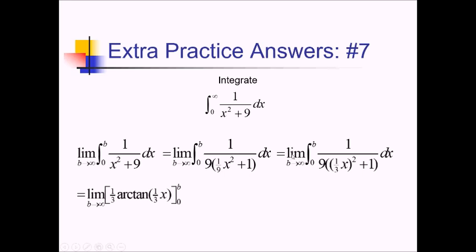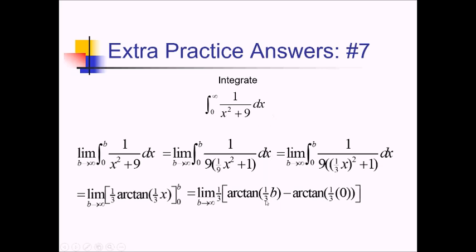So I'm going to have arctan of 1 third x, but I have to divide by the inner derivative. Dividing by 1 third really means multiplying by 3, and we already have a 9 in the denominator, so I have 3 over 9, which comes out to 1 third arctan of 1 third x, evaluating from 0 to b. As b approaches infinity, arctan of infinity — taking an infinite slope and giving back an angle — is 90 degrees or pi over 2. With 0 plugged in, arctan gives back 0. So we've got pi over 2 minus 0 inside, with 1 third outside, giving us pi over 6.